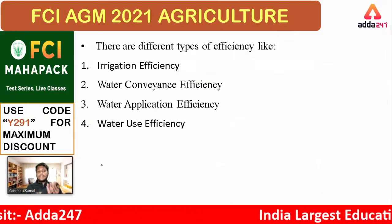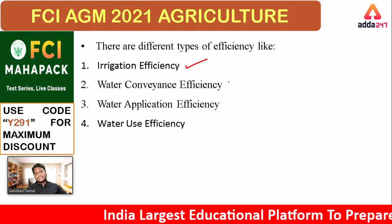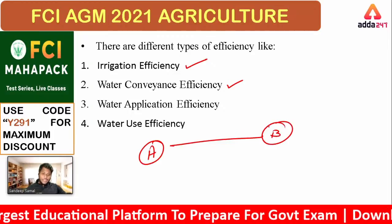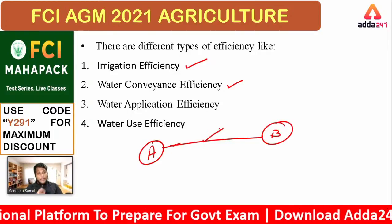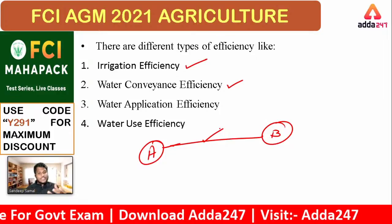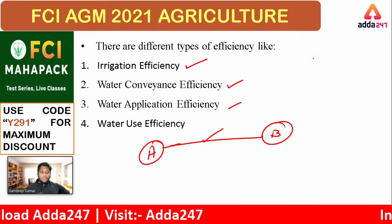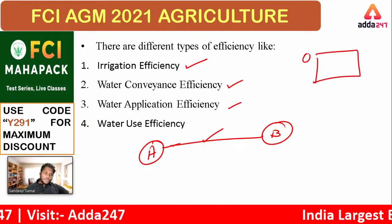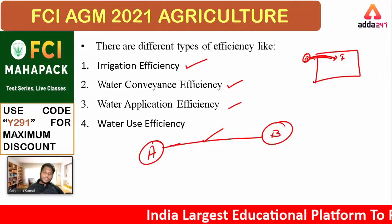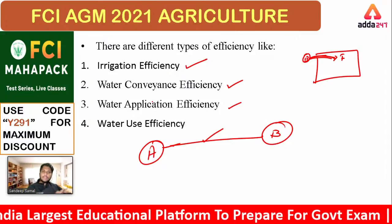There are different types of efficiency: irrigation efficiency, which I just explained; water conveyance efficiency, meaning water conveyed from point A to point B and how much is lost in that transfer; and water application efficiency, which is the efficiency of water being transported from point B to the field. Finally, there is water use efficiency. These are all in sequence. Let me make a proper diagram so you can understand it.